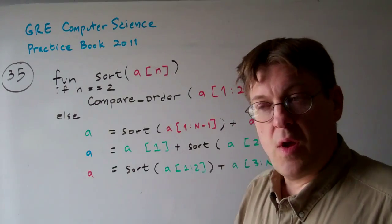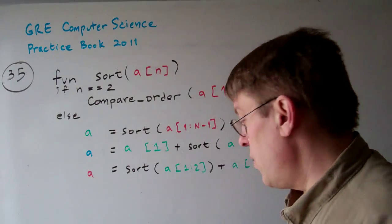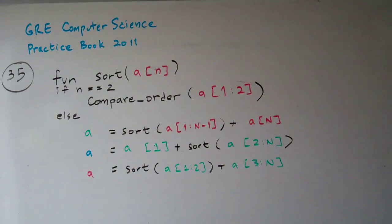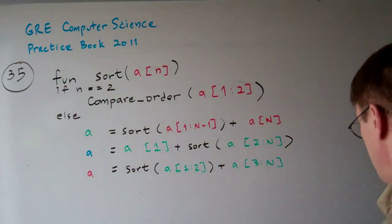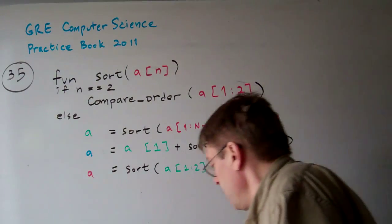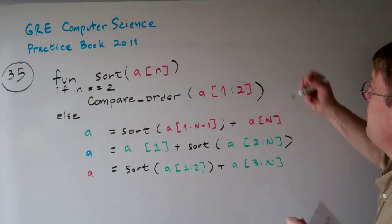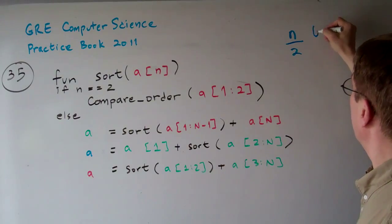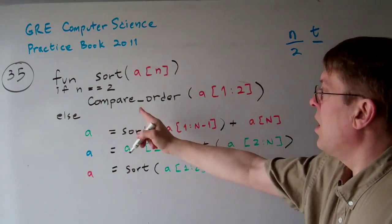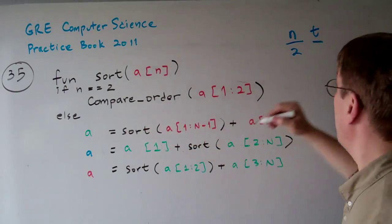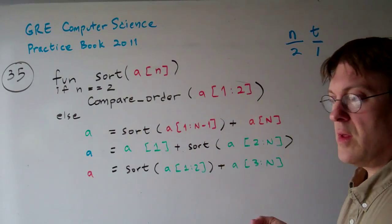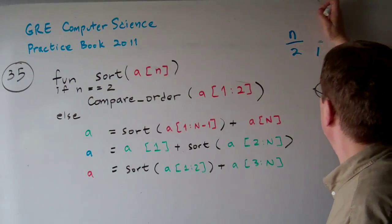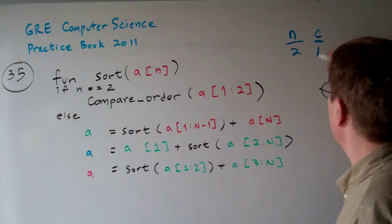Now the question is: what's the time complexity? In order to figure that out, let's count it out. I'll do this in blue. If n equals two, we're just going to do one compare. So the number of comparisons — let's call it C — is going to be one.